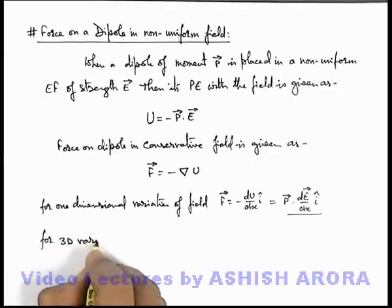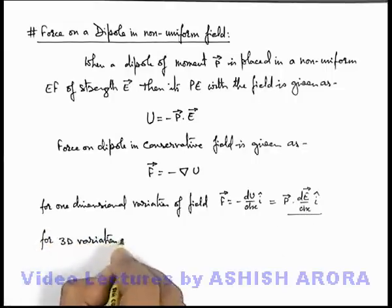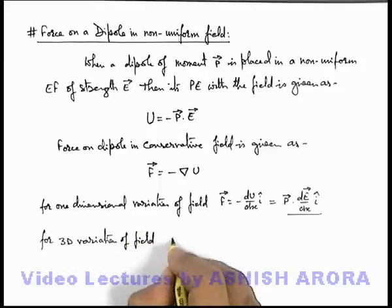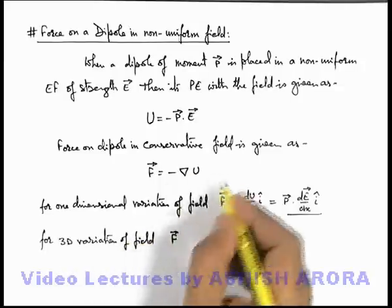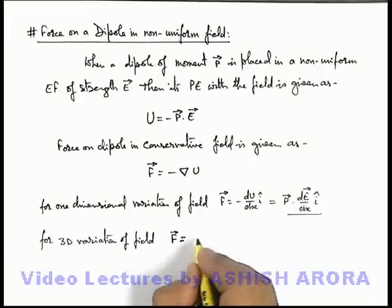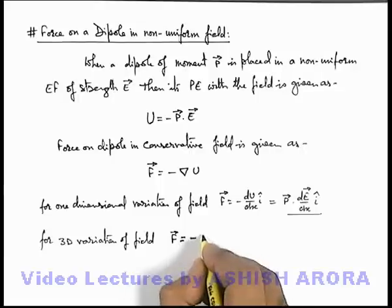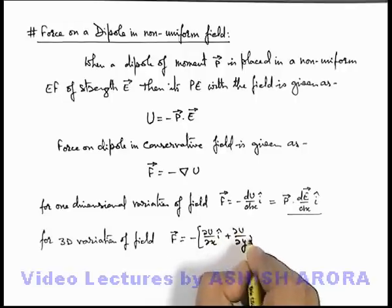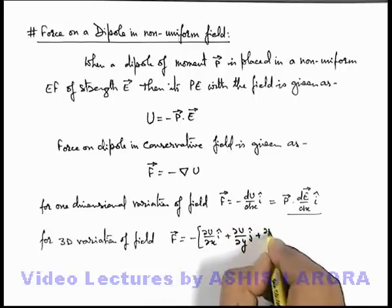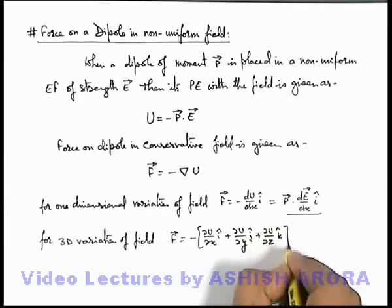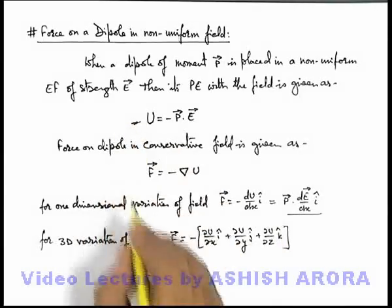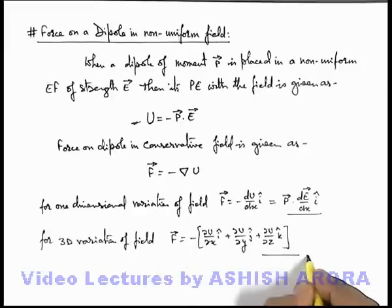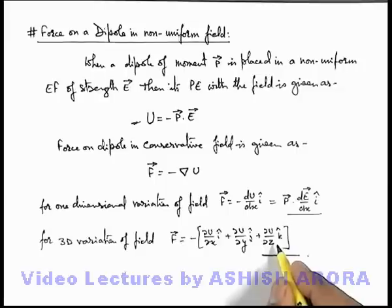And for three-dimensional variation of field, it can be given using the partial derivative form. We can write it as minus of (∂U/∂x) î plus (∂U/∂y) ĵ plus (∂U/∂z) k̂. Here we can substitute the value of interaction energy from this expression and find out the net force acting on the dipole when placed in a non-uniform electric field.